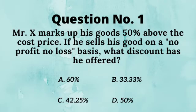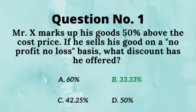Q1. Mr. X marks up his gold 50% above the cost price. If he sells his gold on a no-profit, no-loss basis, what discount has he offered? Answer is 33.33%.